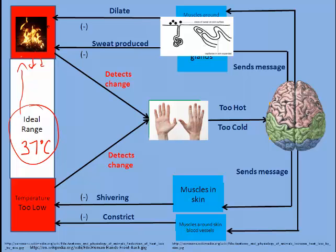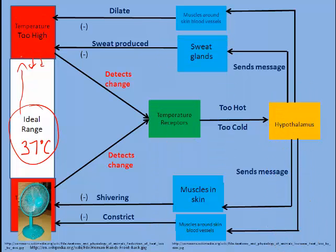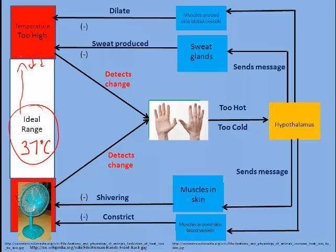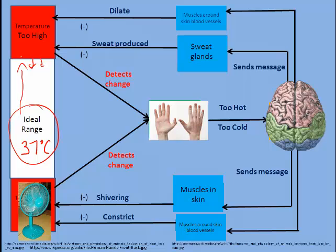The opposite can also happen because we can also get too cold. If we get too cold, the temperature receptors in our skin would again note that and send a message to the hypothalamus. This time the hypothalamus would send a different message to the muscles of our skin — it would actually cause them to start to shiver, and it might actually cause them to contract and cause our hair to stand on end, which would cause more air to be trapped near our skin and keep us a little bit warmer.